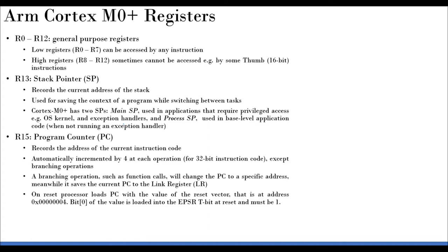R15 is the program counter (PC). It stores the address of the next instruction to be executed. For a 32-bit instruction, the PC is incremented by 4; for a 16-bit instruction, it is incremented by 2 — because memory is arranged in 8-bit blocks, so 32 bits require 4 locations and 16 bits require 2. For branching operations such as function calls, the PC is changed to a specific target address, and the current PC value is saved to the link register.